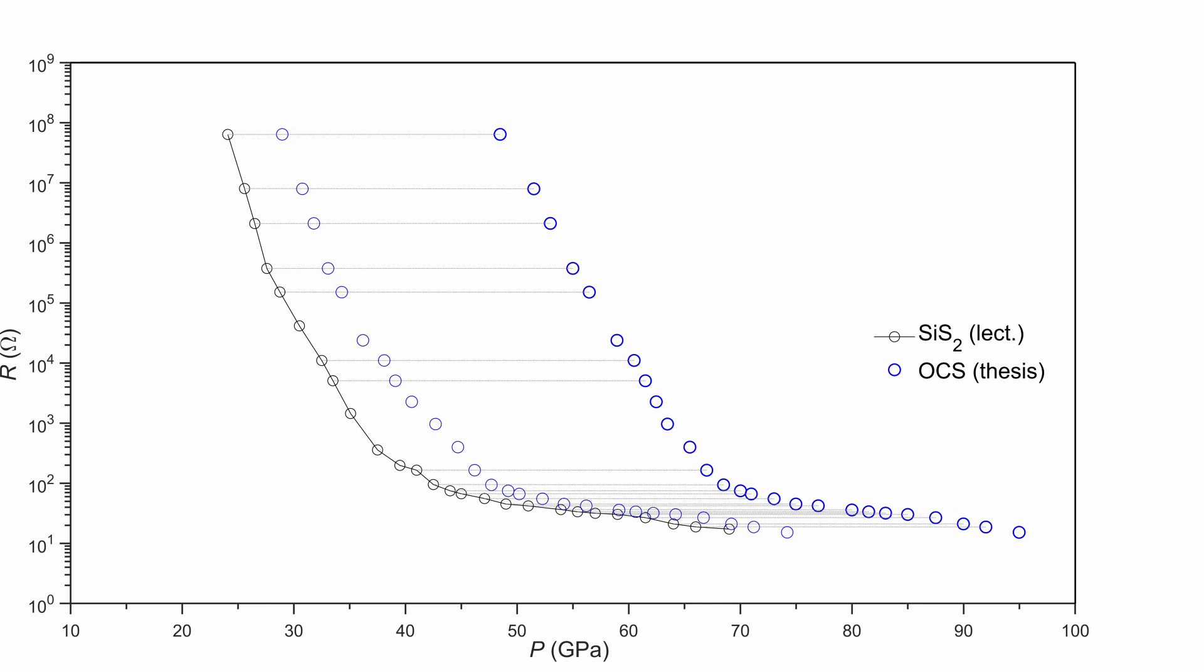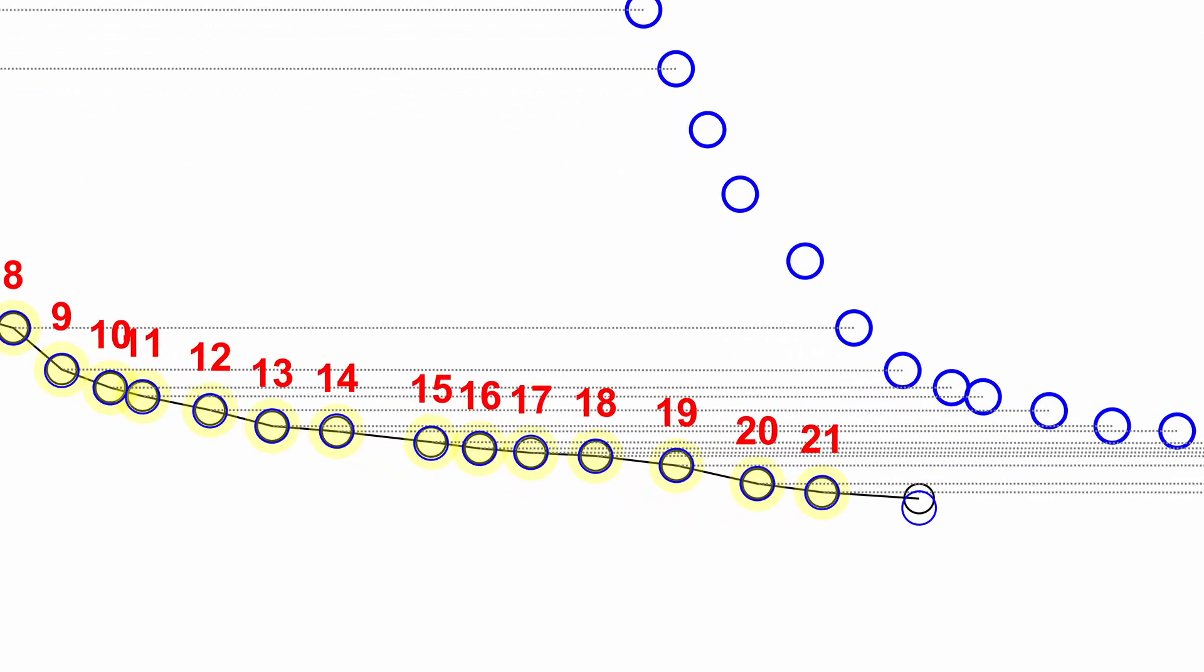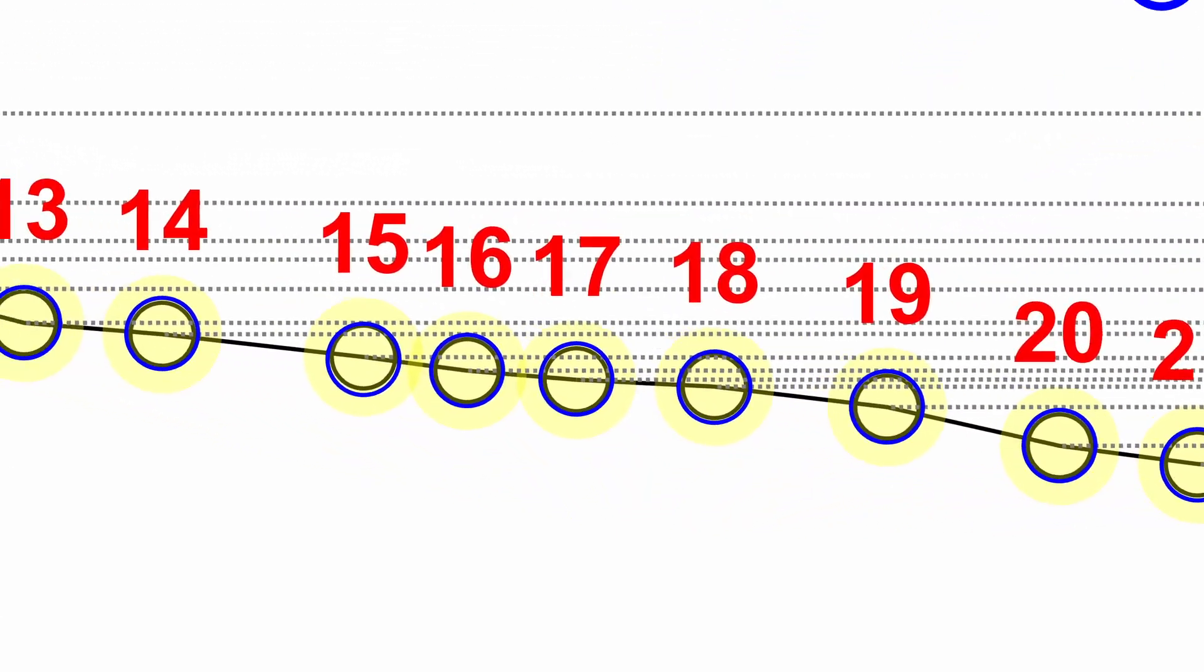And all the other materials, carbon disulfide, silicon disulfide, germanium disulfide, tin disulfide, all those materials have the same behavior and go to insulator-metal transition superconducting. And this can be recoverable.